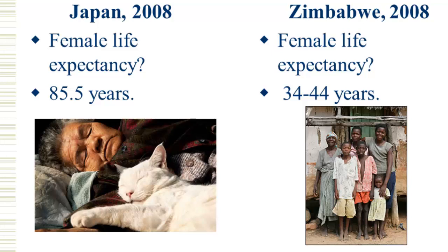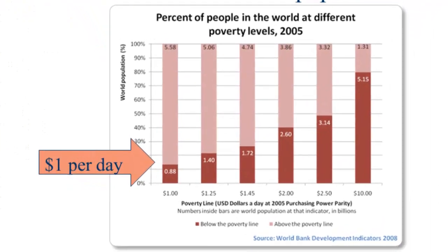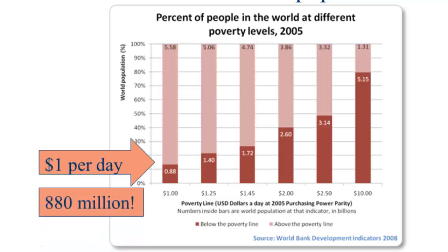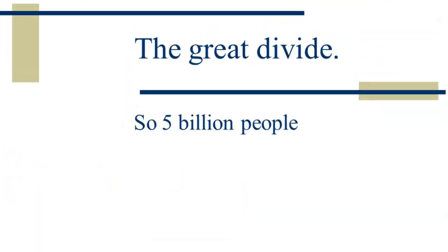This illustrates opposite ends of the spectrum in terms of life expectancy. Money is a measure of well-being for most of the world's population, and it remains scarce for most of the world's population. If we define poverty as living on a dollar a day or less, that's 880 million people in 2005. If we're willing to say poverty is less than $10 per day, that raises it to over 5 billion people trying to live on $10 a day. So there's a great divide.